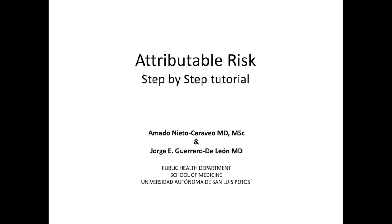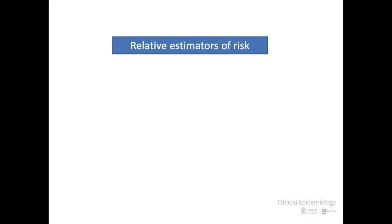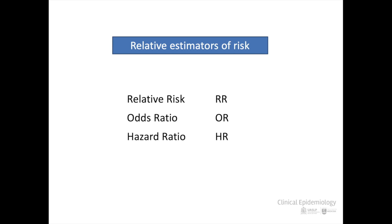The usual outputs of clinical studies to determine the risk of suffering a disease are the relative risk estimators — that is, a number that establishes to what extent an exposure to a risk factor increases the probability of developing the disease in comparison to the absence of the exposure. These estimators are the relative risk, generally referred to as RR, the odds ratio, or OR, and the hazard ratio, or HR, which for practical purposes are interpreted in the same way.